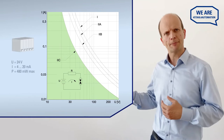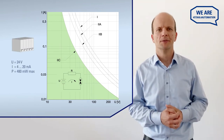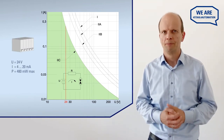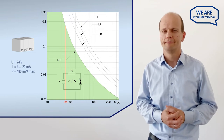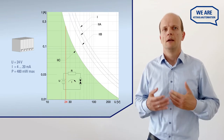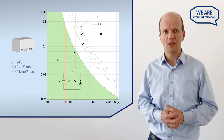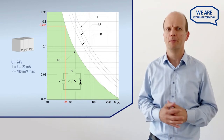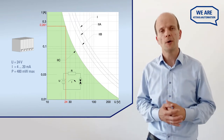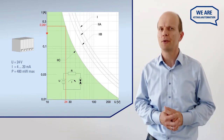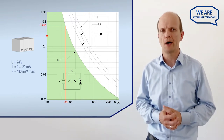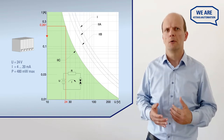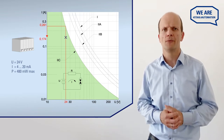Let's plot in our example values and draw a vertical at 24 V. This vertical intersects the IIC curve at about 260 mA.